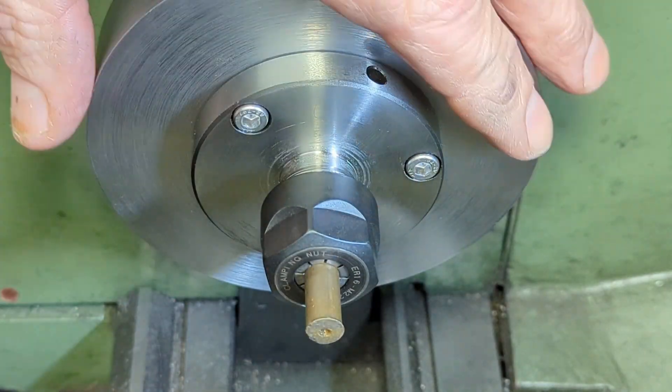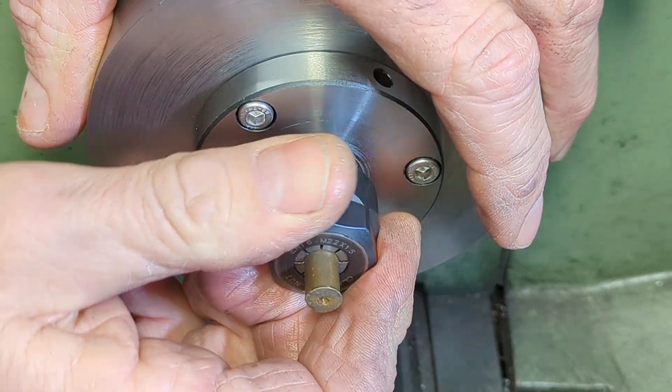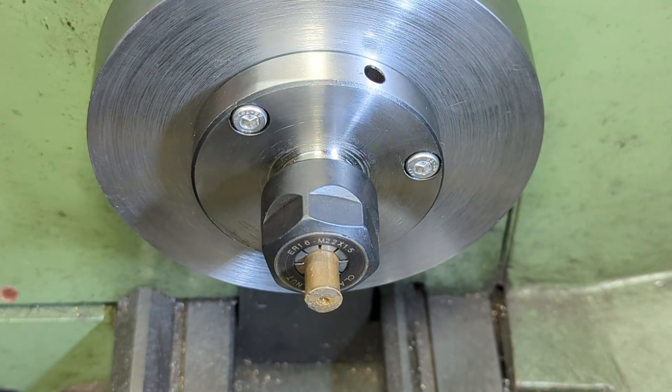Making the sleeves is a basic turning exercise, just at a much smaller size than I am used to working. And it does give me a chance to play with my new collets.